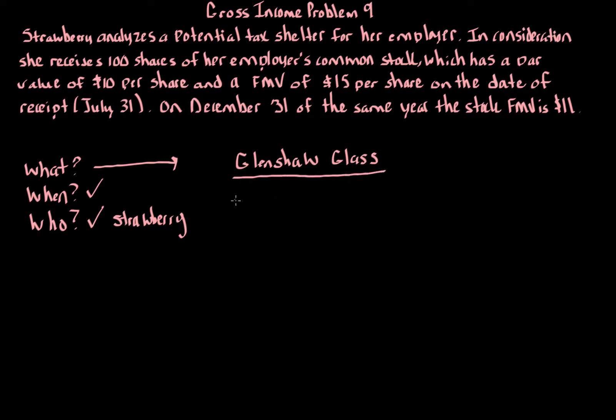Glenshaw Glass specifically focuses on a definition from the Supreme Court jurisprudence. It states that gross income requires: there must be an undeniable accession to wealth, which means that net worth, which is assets minus liabilities, has increased.